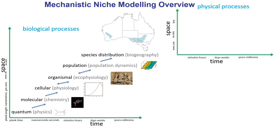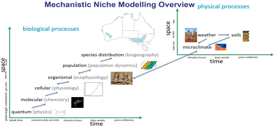From the physical side of things, we also have processes operating at different scales of space and time. We have the microclimatic processes that the individual organism is experiencing, the weather and soil conditions driving those microclimatic conditions at a greater scale, and finally the climatic processes driving the weather systems and geological processes driving soil and landscape formation — operating at even greater timescales and spatial scales.